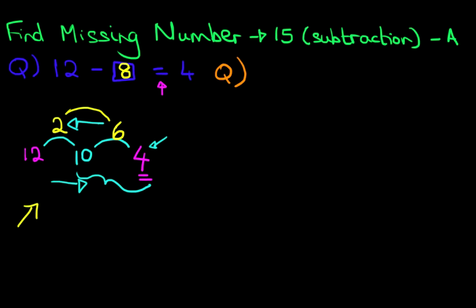Now suppose we have this. We've got something minus 6 equals 5. Now we can use the number bonds, the mental arithmetic that we have, but we're going to show you a little trick with this.